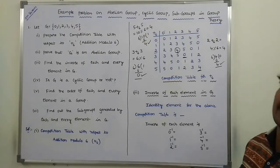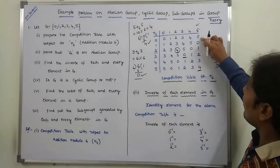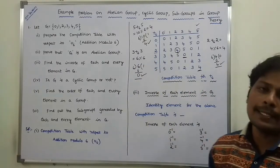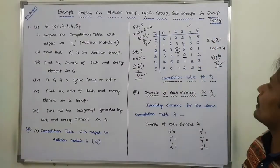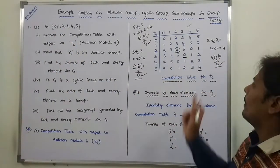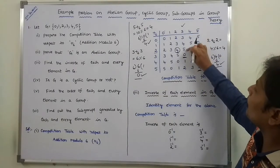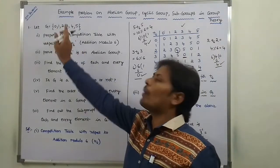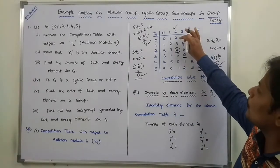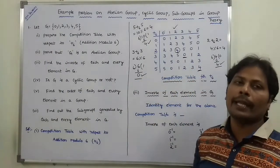We observe each column in the composition table. For the column under 5, the order is 5, 0, 1, 2, 3, 4 — not the same as G's order 0,1,2,3,4,5. For column under 4, order is 4,5,0,1,2,3 — not same. For column under 3, elements are 3,4,5,0,1,2 — not same. For column under 2, elements are 2,3,4,5,0,1 — not same. For column under 1, elements are 1,2,3,4,5,0 — not same.